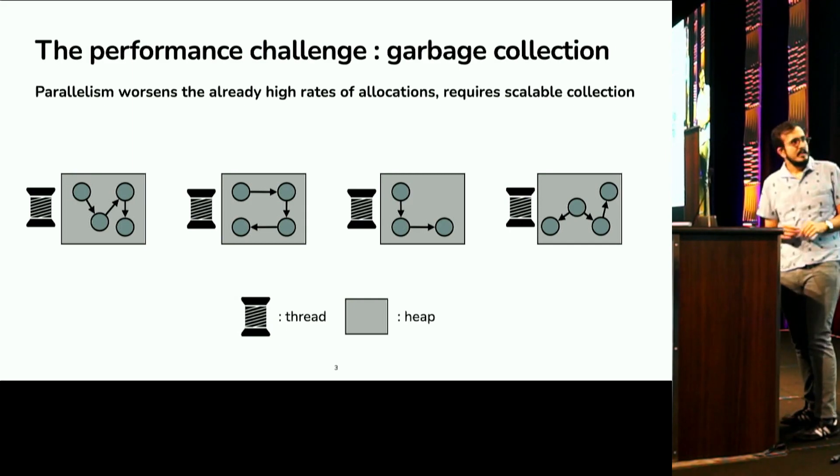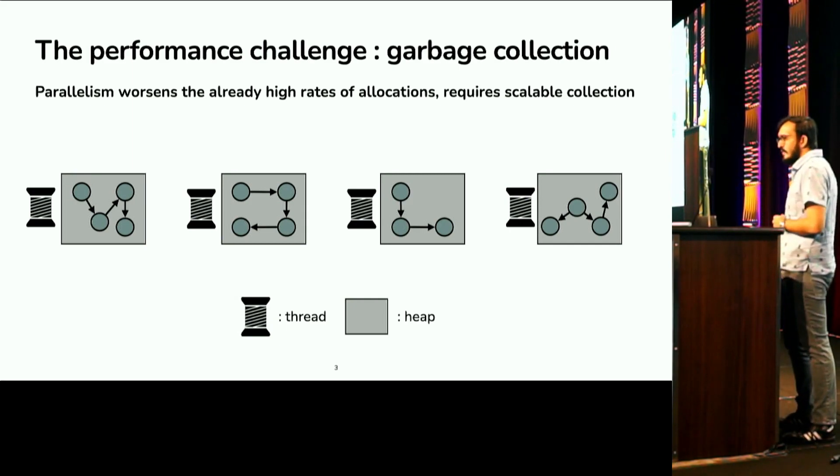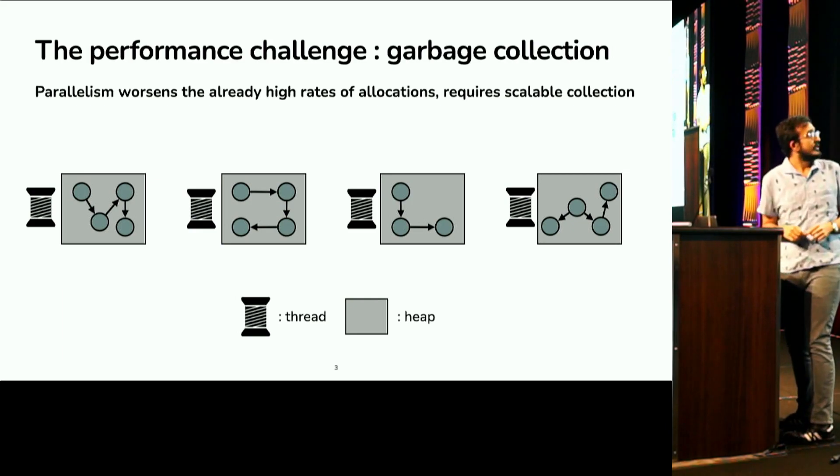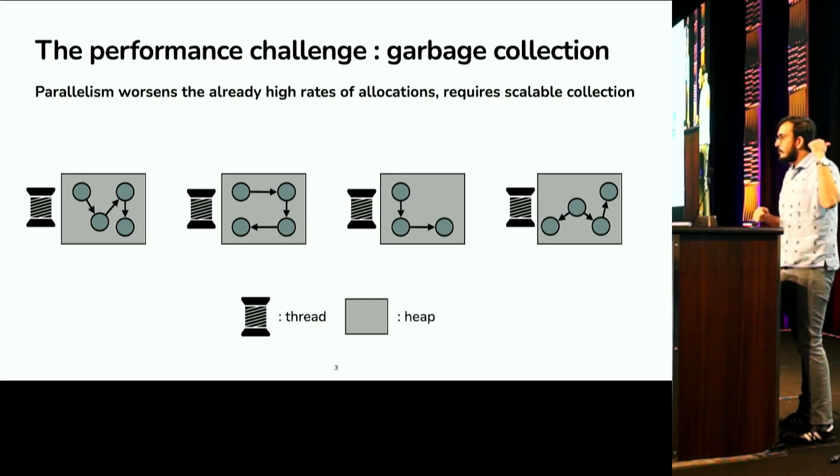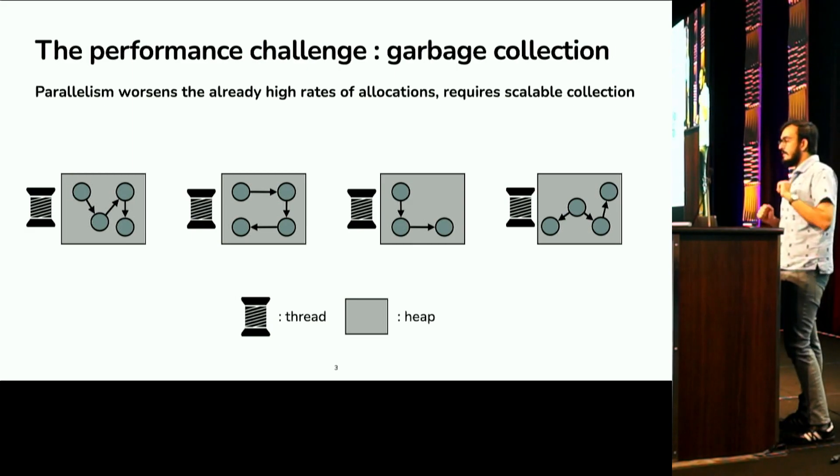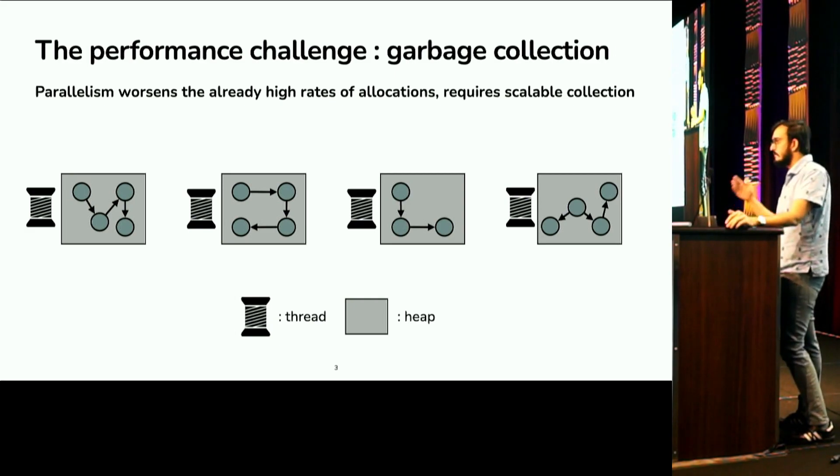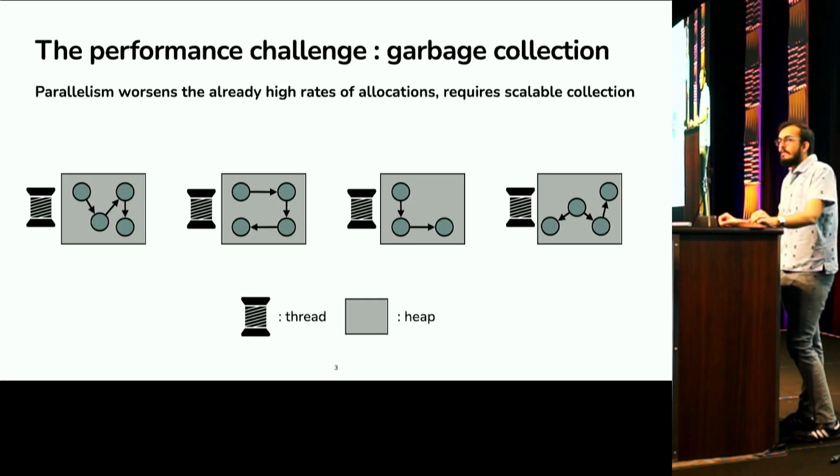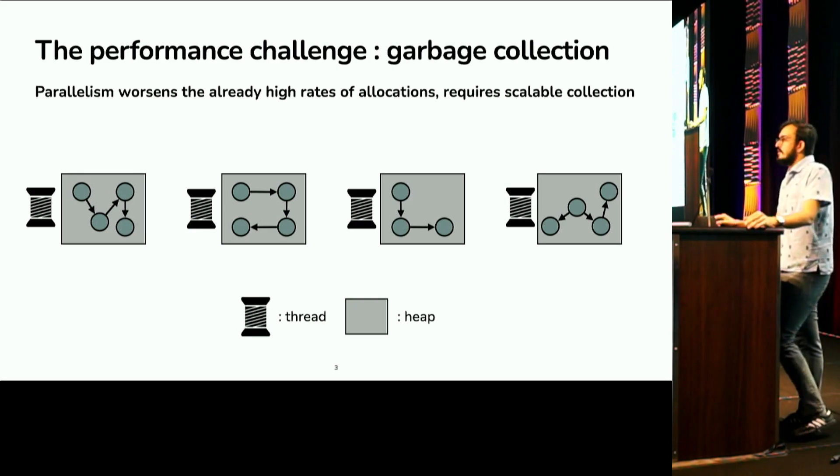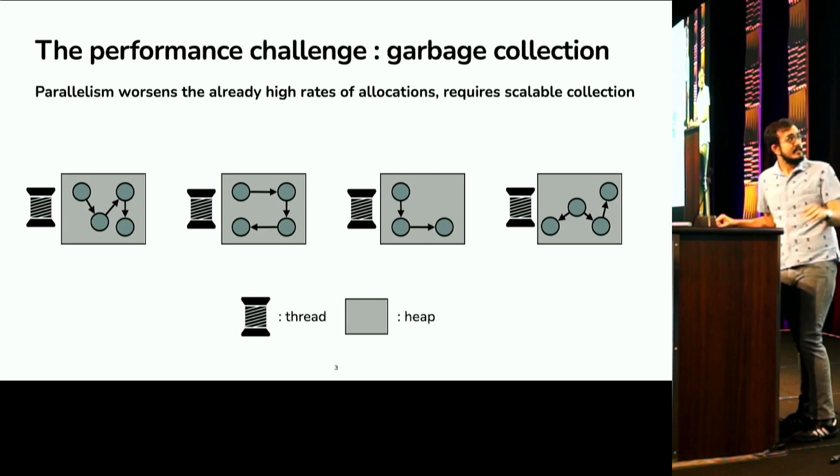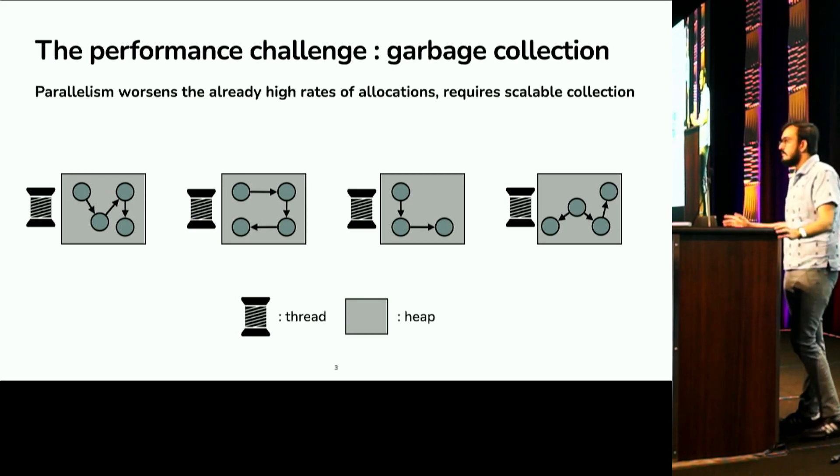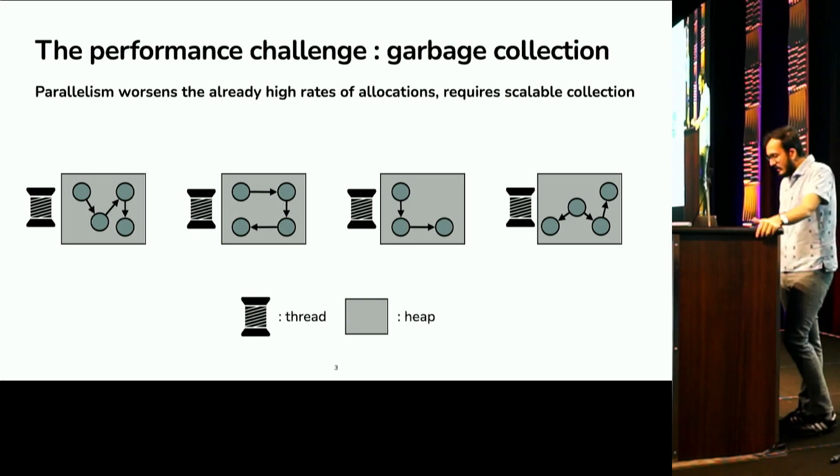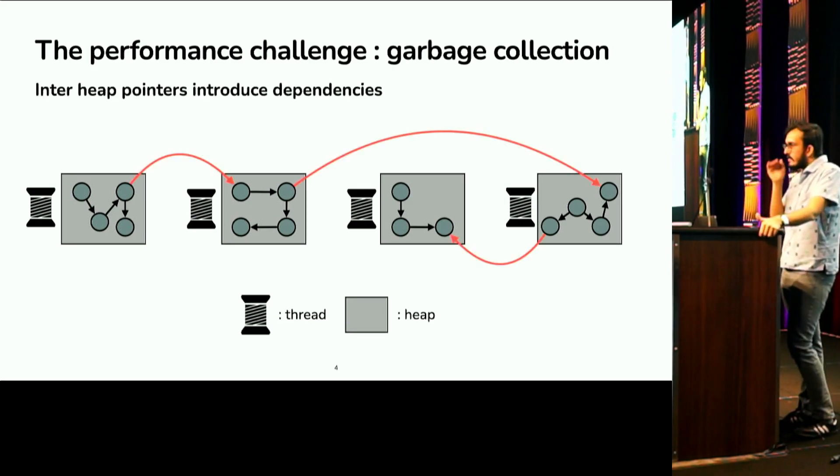Just to illustrate my point, I have drawn spools on my slide taken from the Keynote software, and each spool denotes a thread. Alongside every thread, I've drawn a thread local heap using a gray box, which denotes the allocations that every thread has made. So now if the memory were this simple, we would have perfectly parallel garbage collection. And the reason is that each thread could independently collect its memory on its own, and we would be fine.